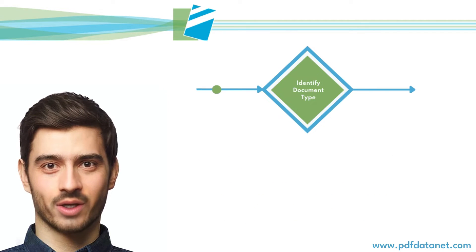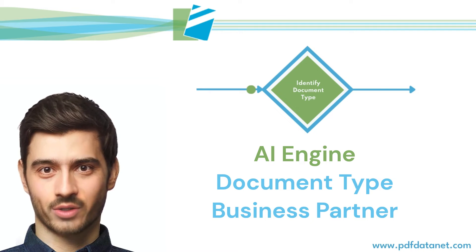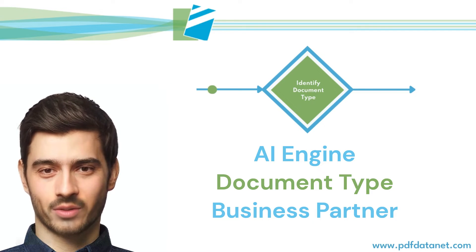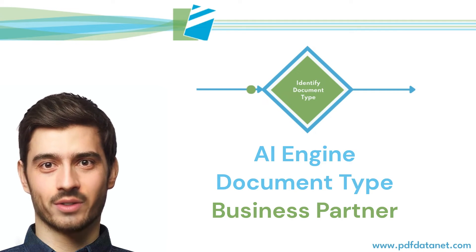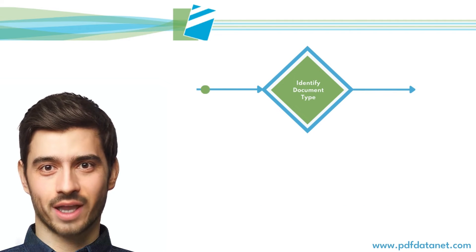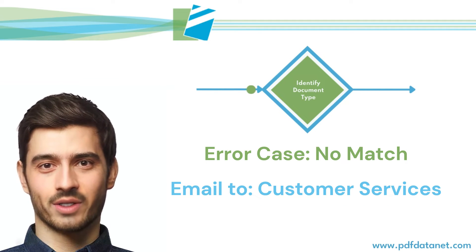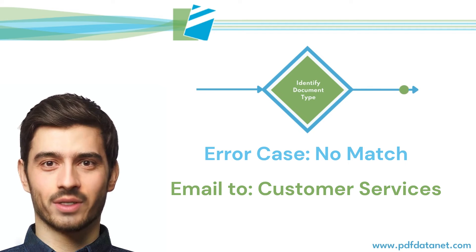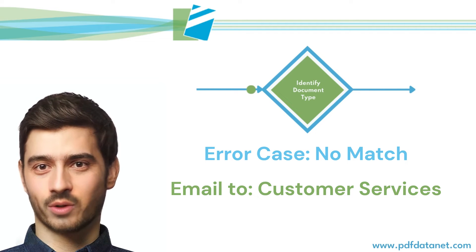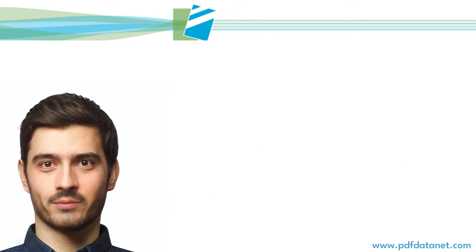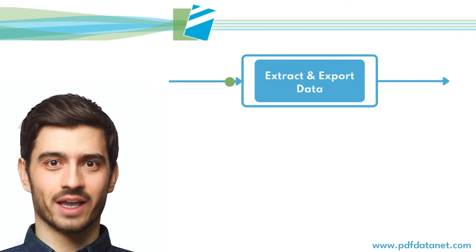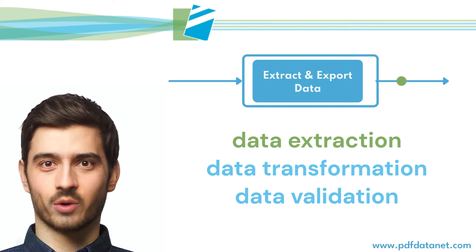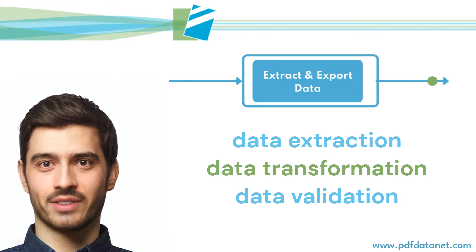We then use our artificial intelligence engine to automatically identify both the document type and the business partner that sent the document. If the document recognition step doesn't find a match, the document is sent to customer services for review. The required data is now extracted, transformed, and validated.